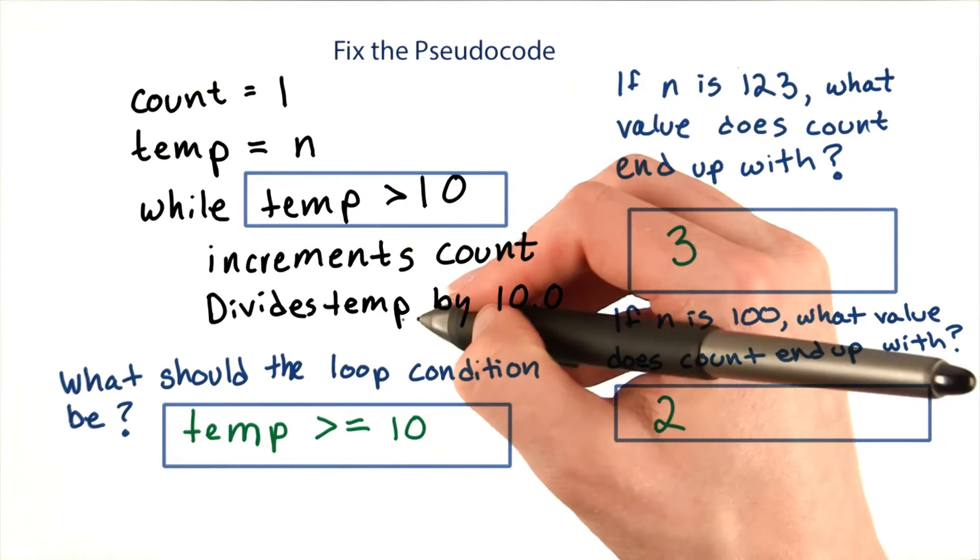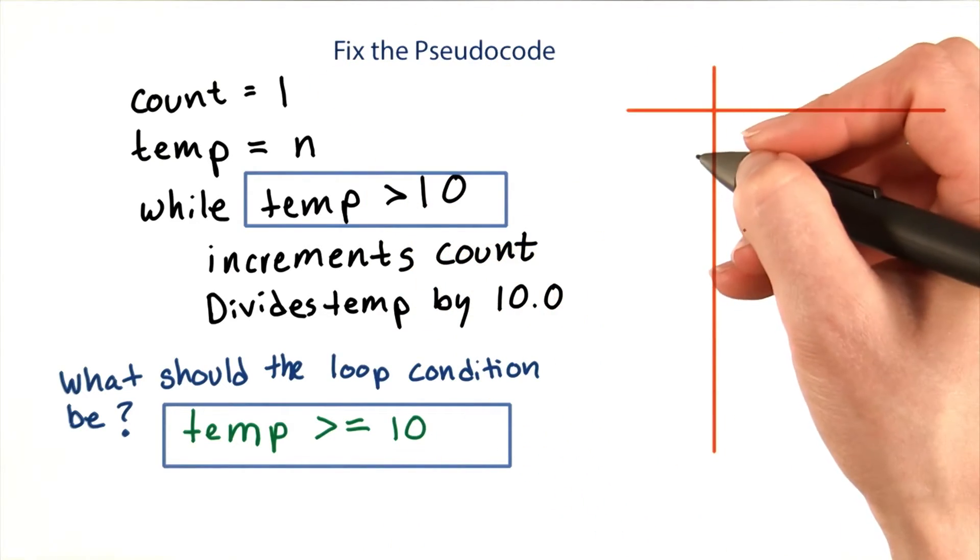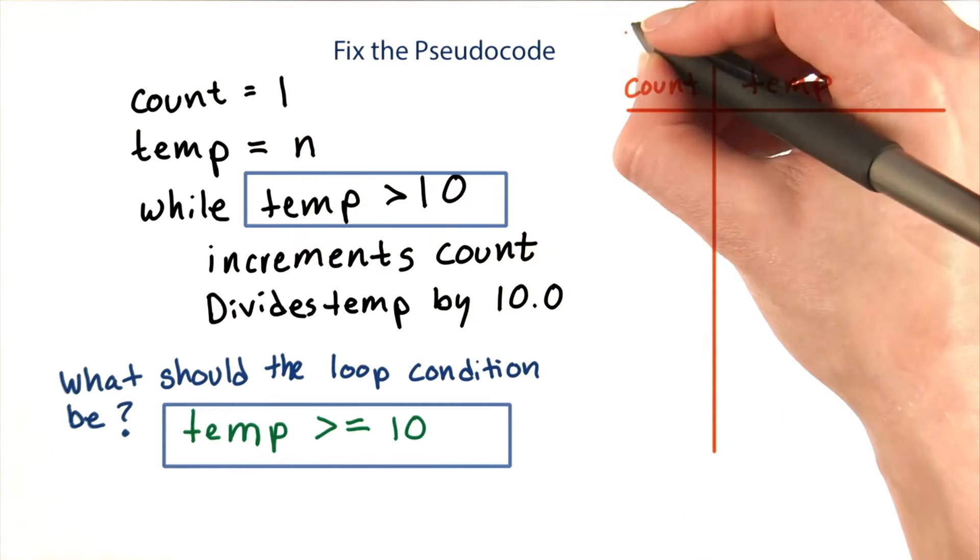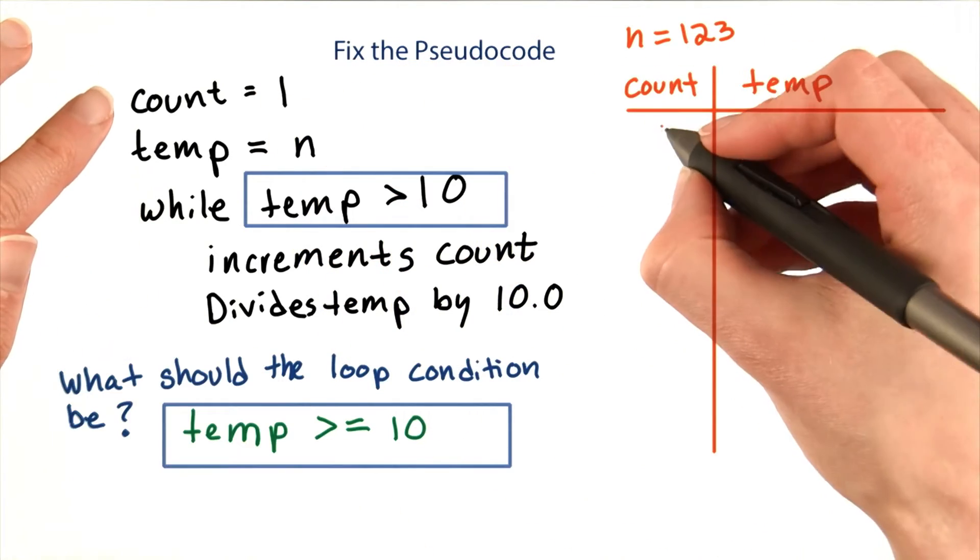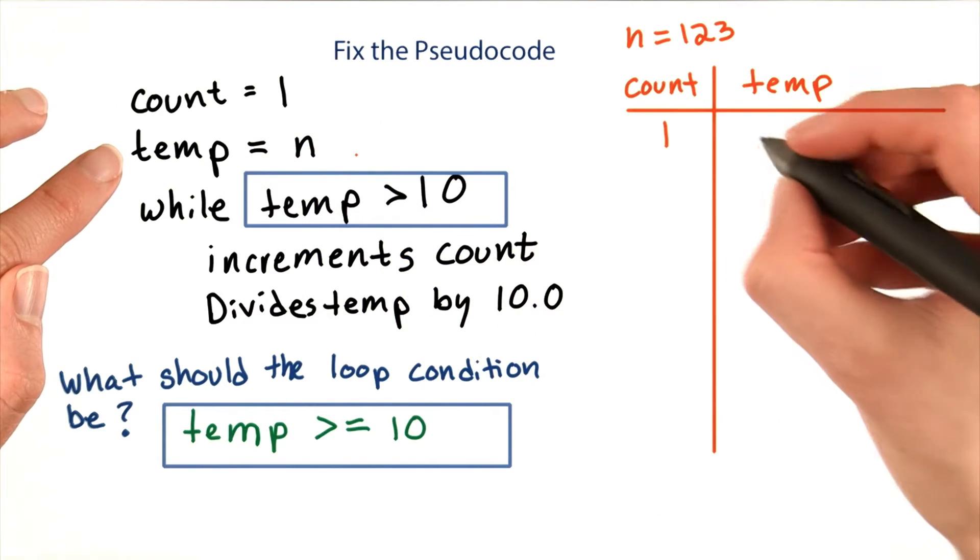We can see this by hand tracing the code. The values I'm interested in are count and temp. If n starts out as 123, then count will start as 1, temp will start as 123.